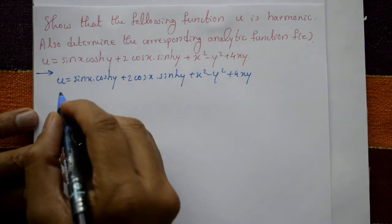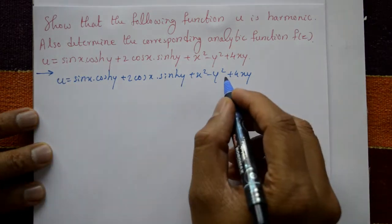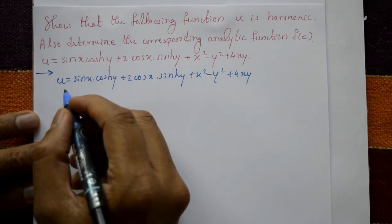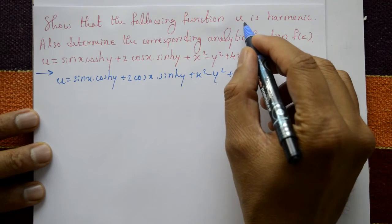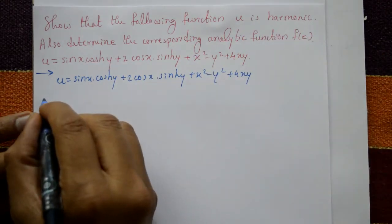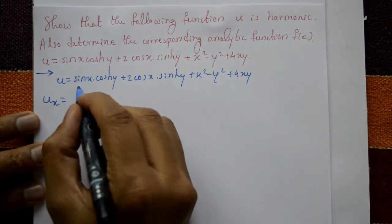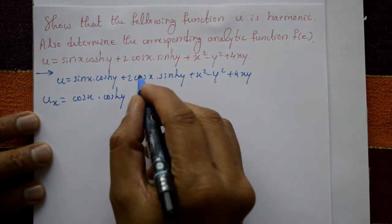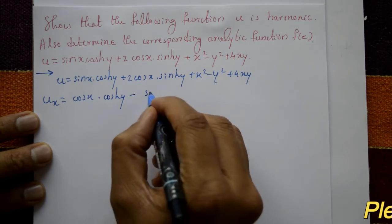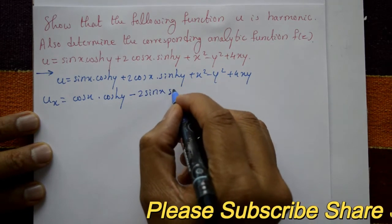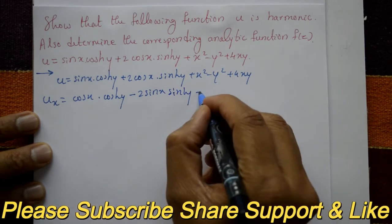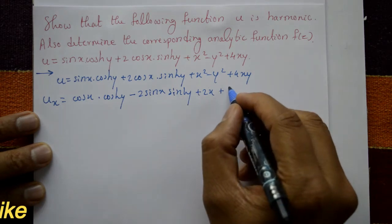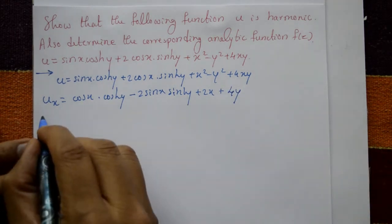u is given in Cartesian form. Now differentiate u with respect to x and y partially. First we verify that u is harmonic. Differentiating u with respect to x partially: this gives cos(x)·cosh(y) — since cosh(y) is a constant — and differential of cos is minus sin(x), and 2·sinh(y), plus 2x, plus 4y.